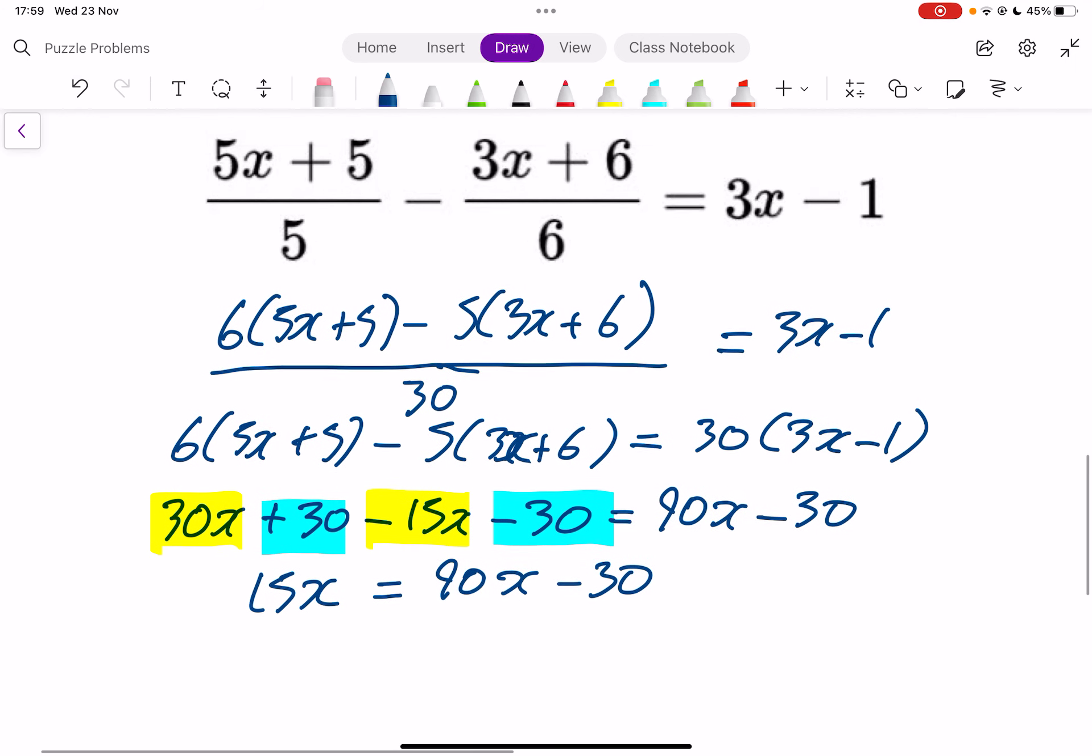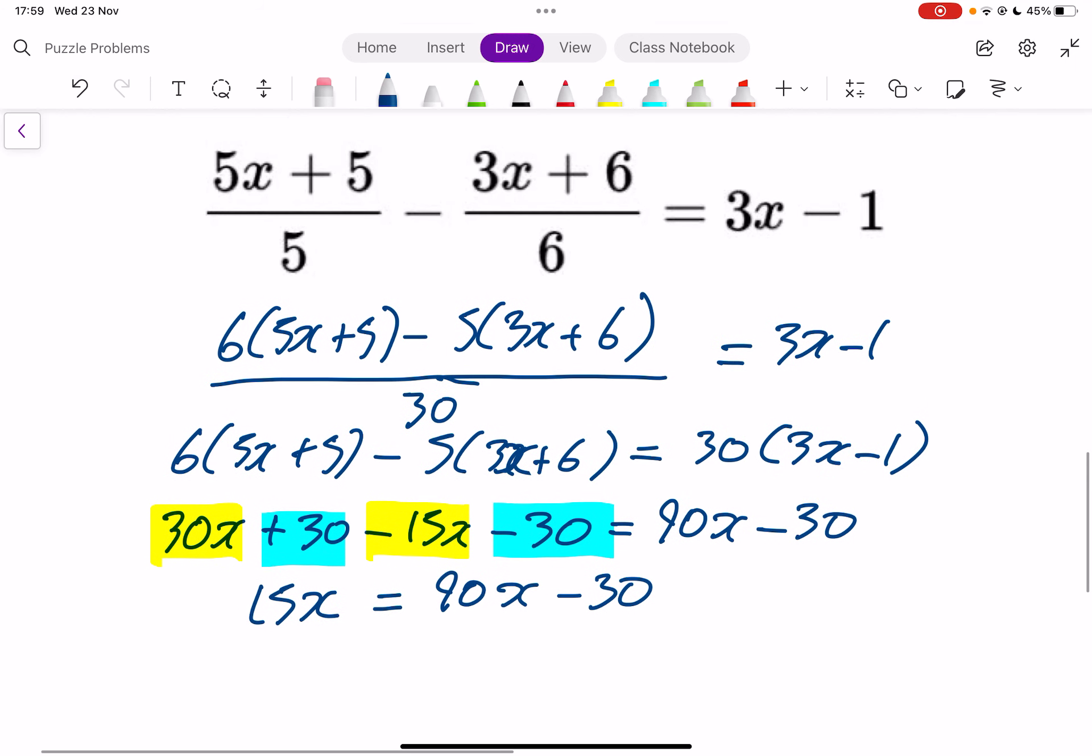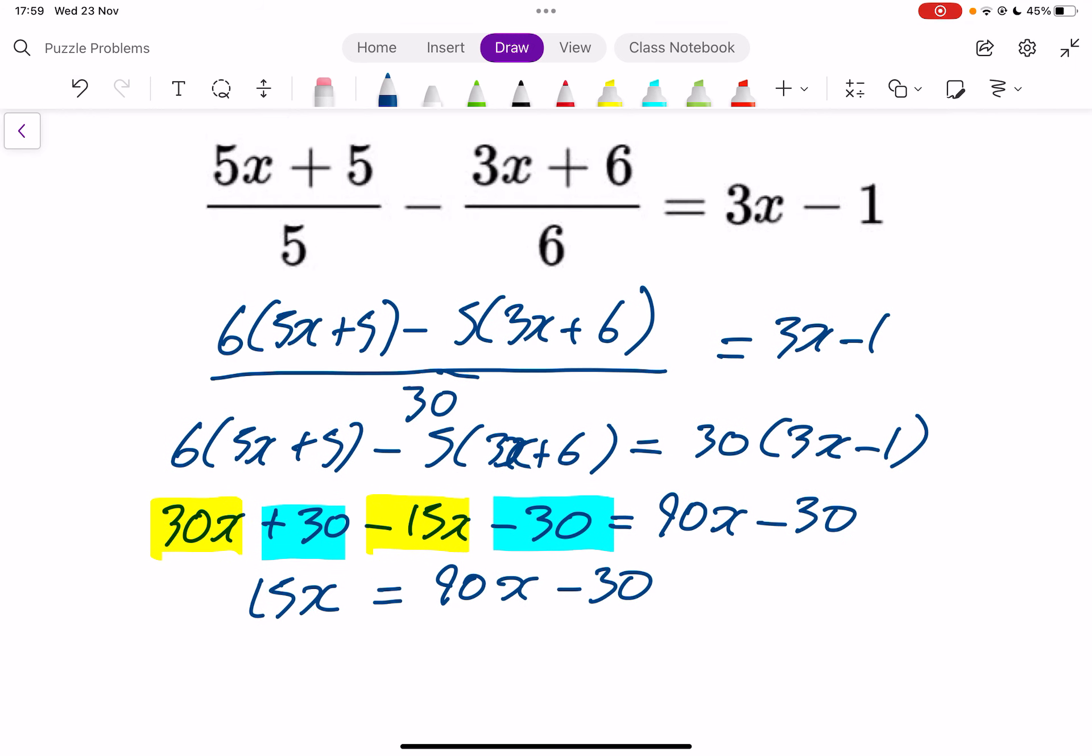And then this is a type of equation where you've got x's on both sides of the equation. So the best thing to do here is to bring all the x's to one side. So I'm going to bring my 15x across. It will become minus 15x. Bring my minus 30 across to the other side. It will become plus 30. And then you can tidy that up. 30 equals 90 minus 15. 90 minus 10 would be 80 minus another 5. It's going to be 75x.